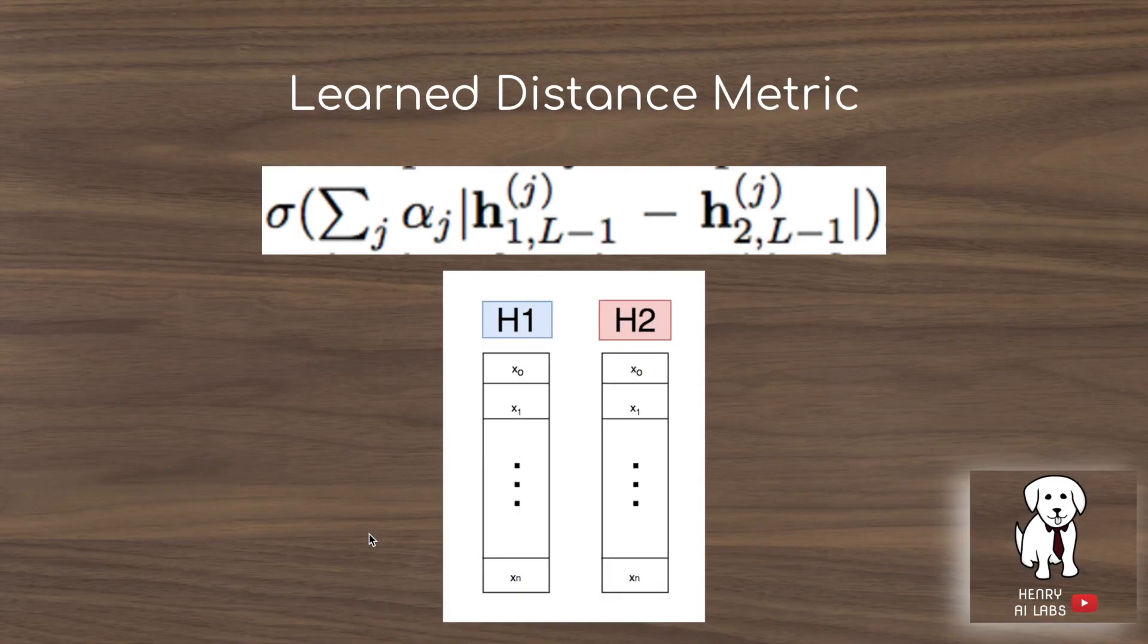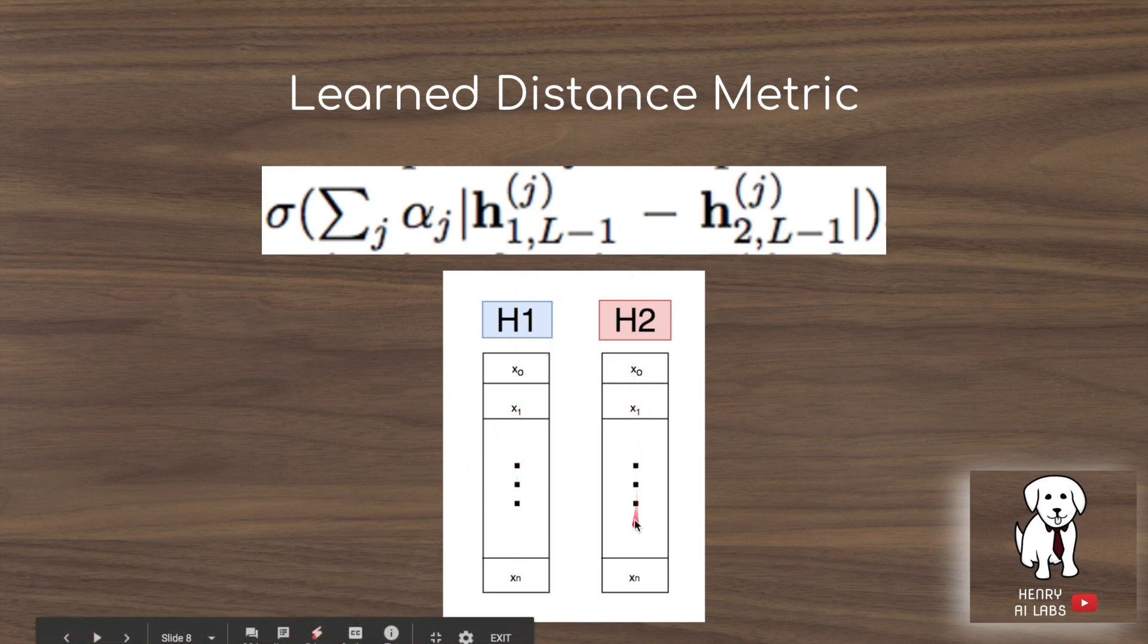This is the learned distance metric. You pass images H1 and H2 through the Siamese network, which is the same convolutional network, producing two vectors. One idea would be L2 distance where you do this minus this squared, plus this minus this squared, and so on, then take the square root of that sum.